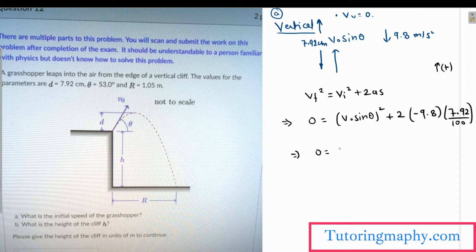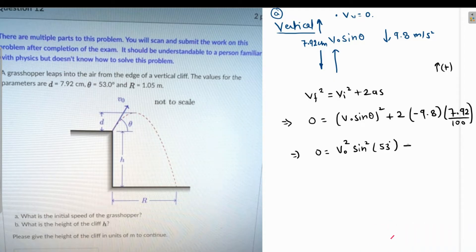This becomes zero equals v naught squared sine squared theta, where theta is 53 degrees, minus—let me just grab my calculator—2 times 9.8 times 7.92 over 100, which is 1.55232.